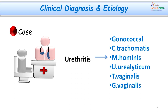Going with the clinical presentation, it was quite clear that the patient was suffering from urethritis — this was a clinical diagnosis. Let us now consider what some of the etiological agents are that can cause urethritis. When we hear the word urethritis, the first thing which comes to our mind is gonorrhea, gonococcal urethritis.